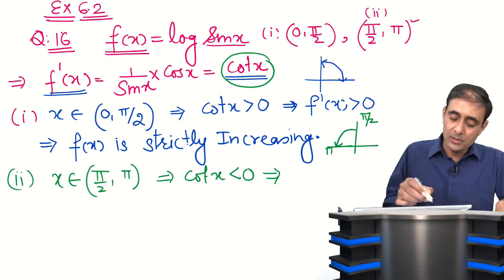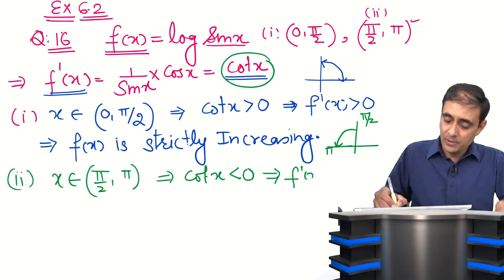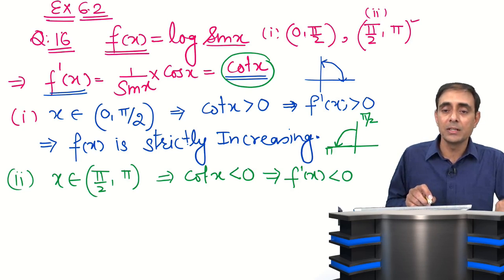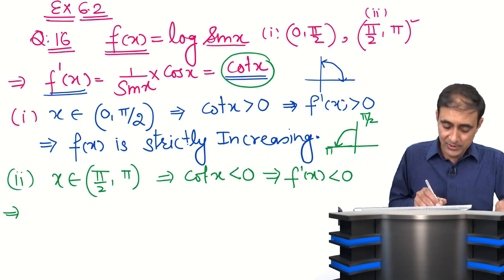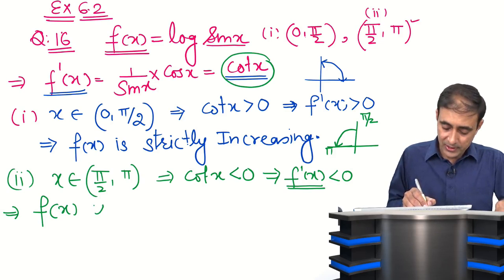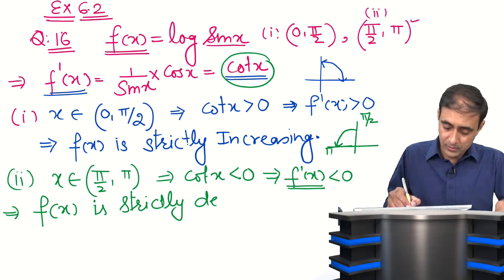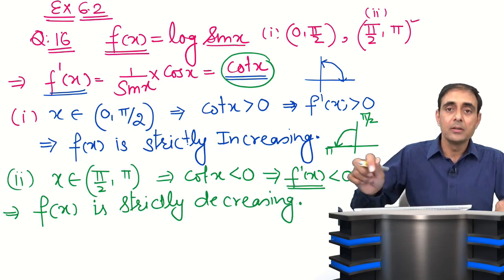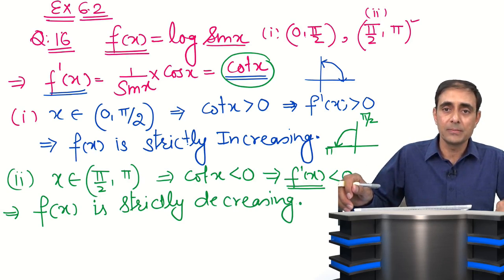Since cot x = f'(x), this implies f'(x) is less than 0. And if f'(x) is less than 0, the function is strictly decreasing. So f(x) is a strictly decreasing function on (π/2, π). This completes question 16.